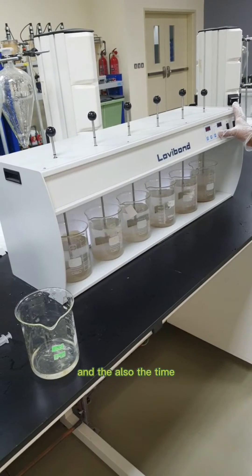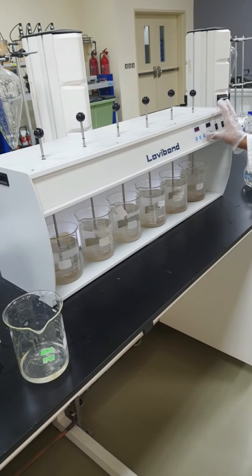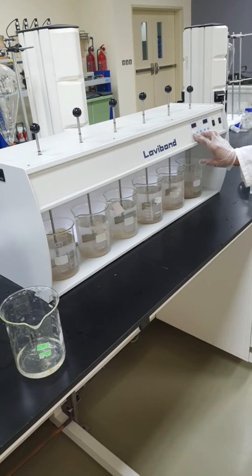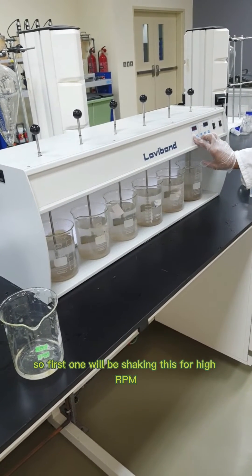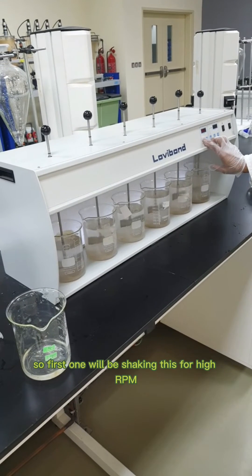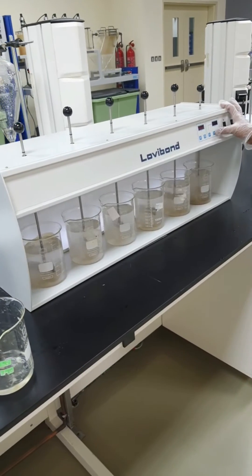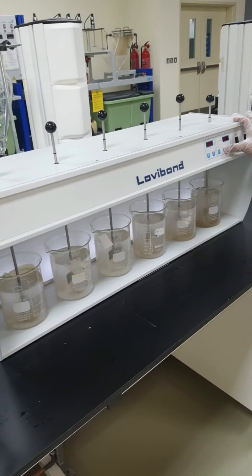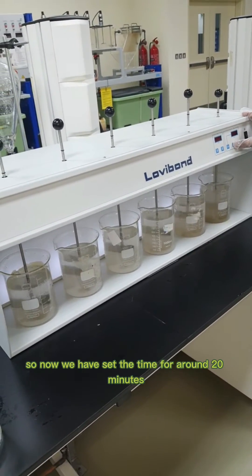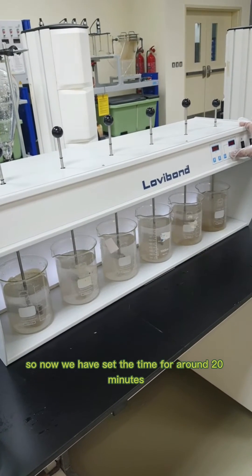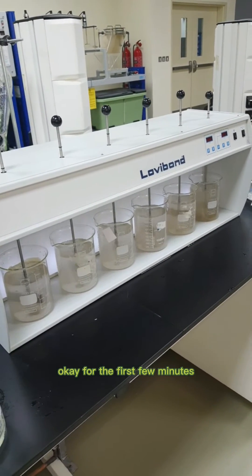We will be stirring this at high RPM, around 100 RPM, for two to three minutes. We have set the time for around 20 minutes at high RPM, then we will slow down the speed.